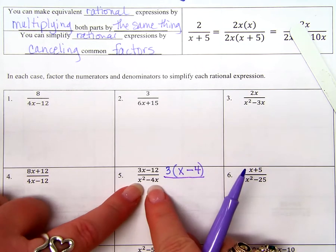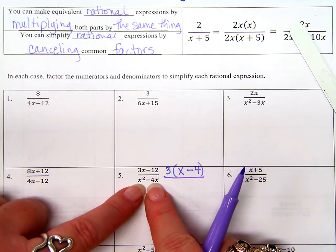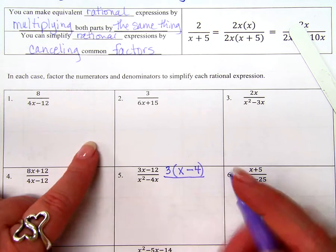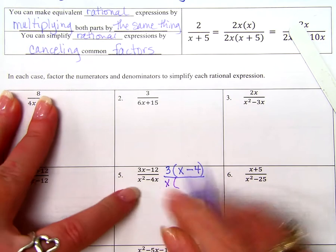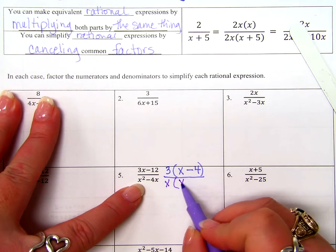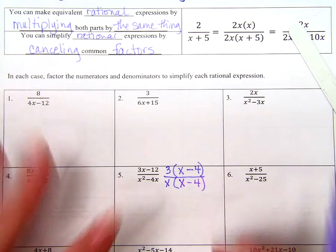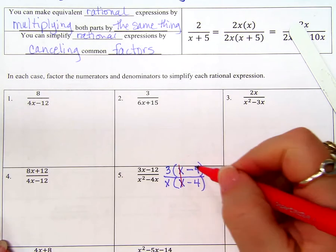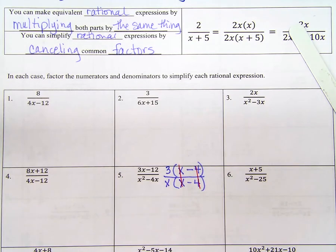Factor. Yeah. I need to factor. If I factor the numerator, what do I get? What do both terms have in common? They're both divisible by 3, right? So if I factor out a 3, what I have left is what? X minus 4. Excellent.